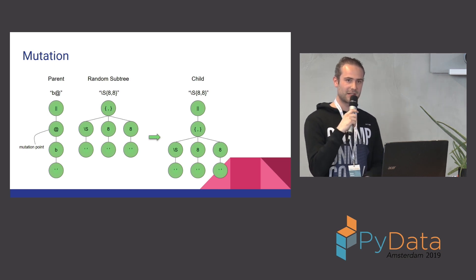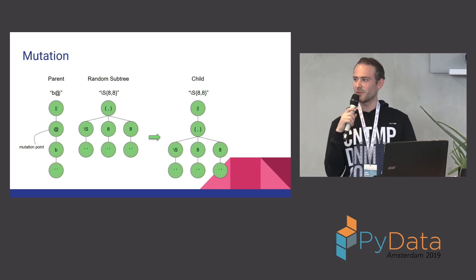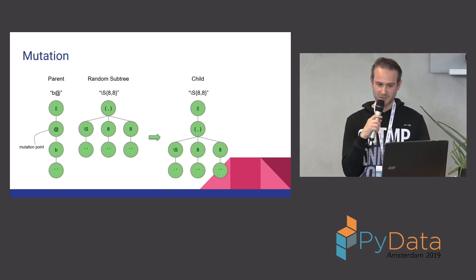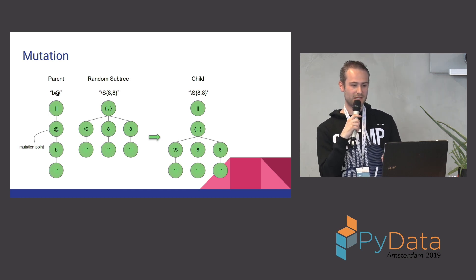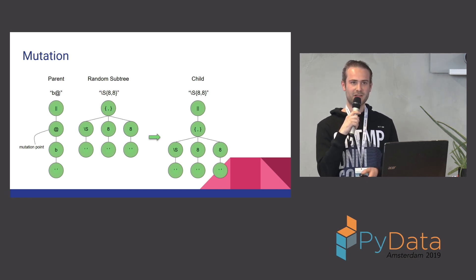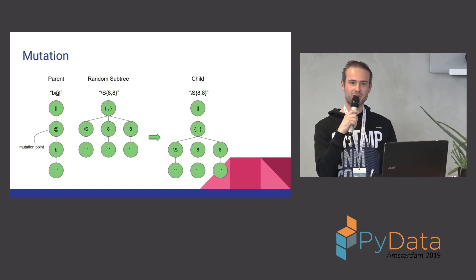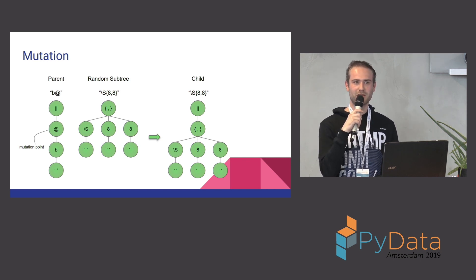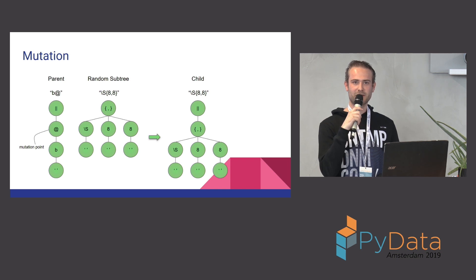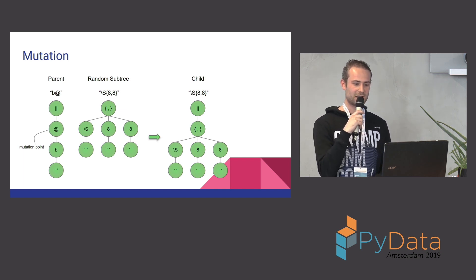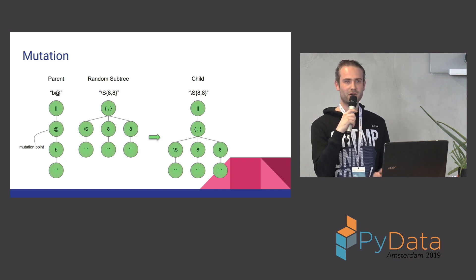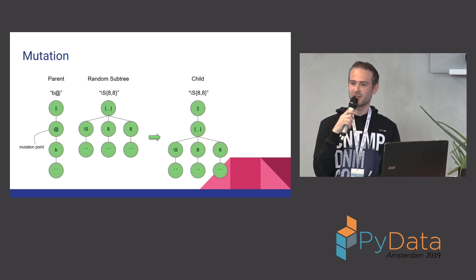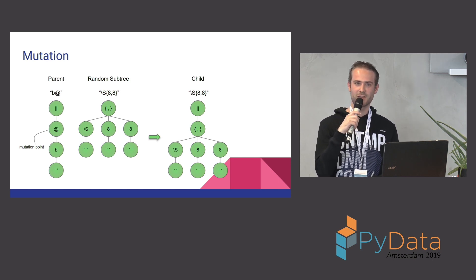For mutation it's kind of similar but still different. You have only one parent and you still select a random mutation point, but now you replace it with a random subtree. In this example we replace the 'at' with a random subtree, but you can also see that the 'b' node in the parent is lost. We also implemented a type called insertion, where the 'b' would actually become part of the random subtree — so it's more like you're inserting a part into the regex.